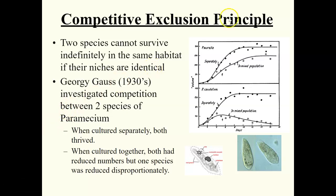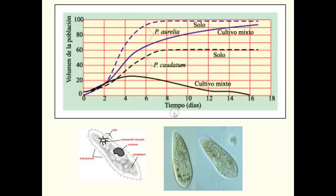The graphs show this clearly. The top graph shows one species and the bottom shows the other. When cultured separately, both species thrive. When mixed together, one species experiences a decline in population growth and size, while the other experiences a much more drastic decline. A combined graph shows the same data on one chart: dashed lines represent each species growing separately (both do well), while solid lines show that when mixed, the purple species declines and so does the black species.